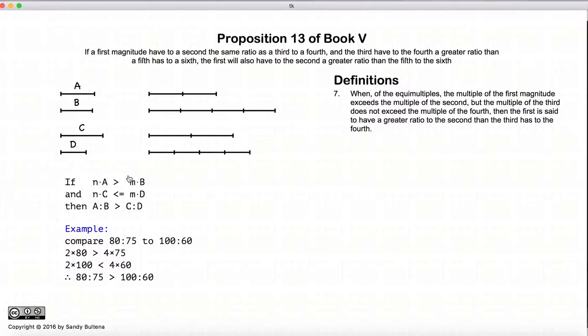If it is possible to find two integers, n and m, such that n times a would be greater than m times b, and n times c would be less than or equal to m times d, if we can find two integers to satisfy these two equations, then that defines that a to b is larger than c to d.